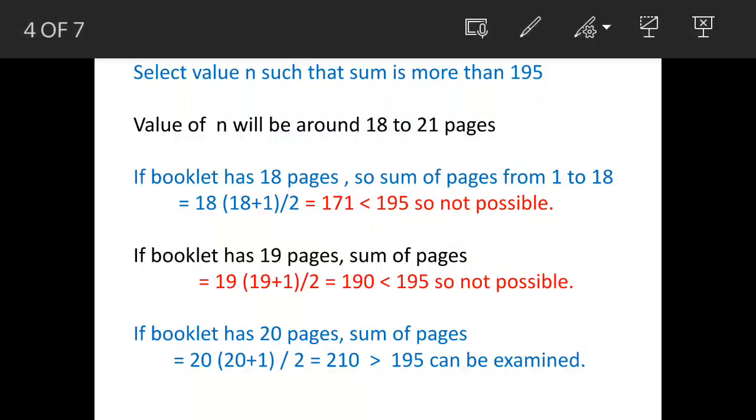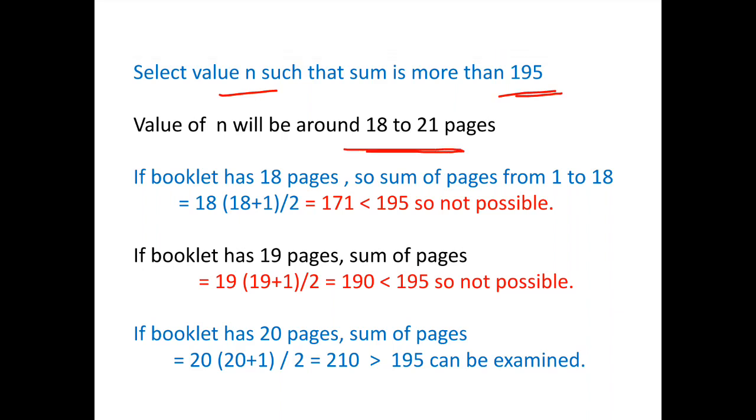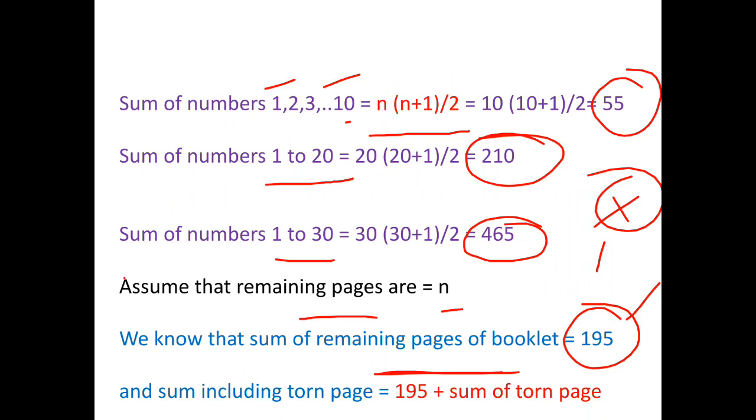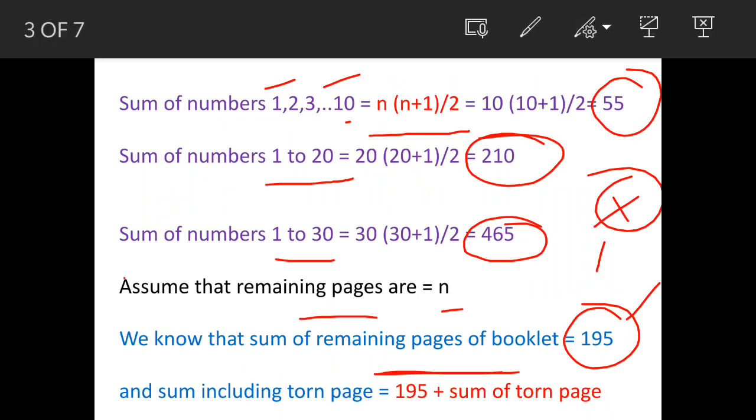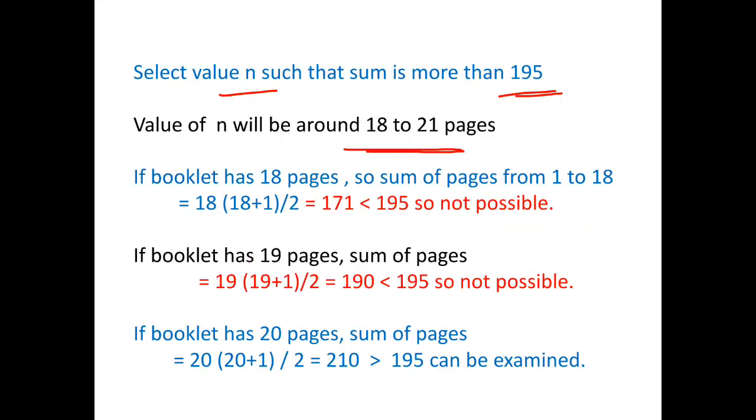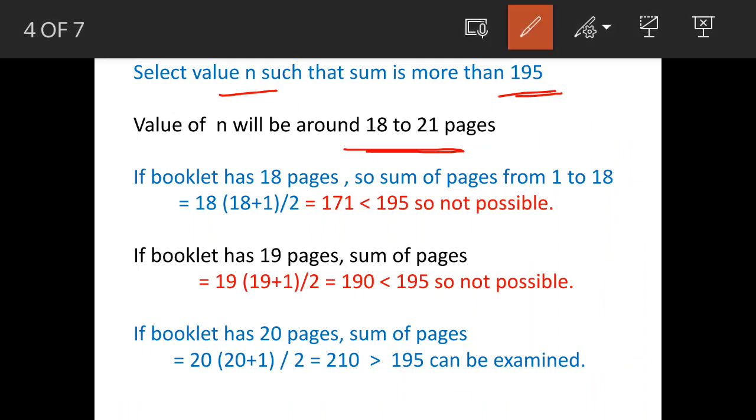Now to find out the missing page numbers, we have to select the value of n pages in such a manner that sum is around 195. So the value of n will be around 18 to 21 pages. Why? Because we have seen in previous slide that when n is around 20, so we are getting a figure of 210. So let us try with these values, so let us keep the value of n as 18.